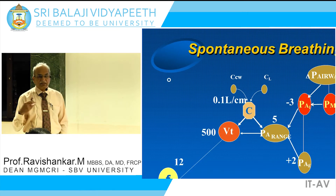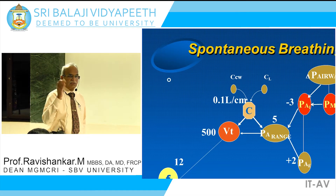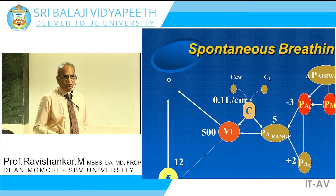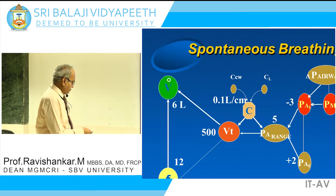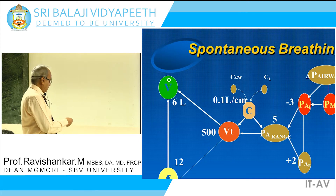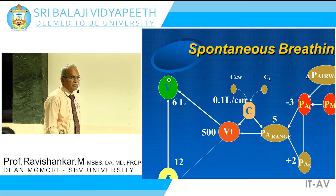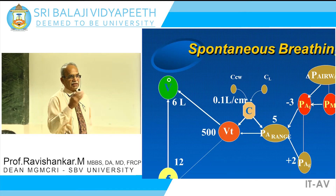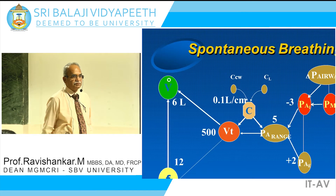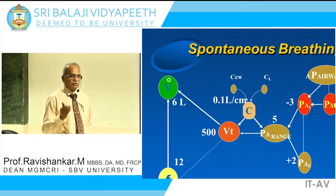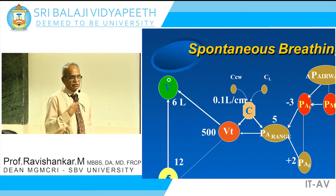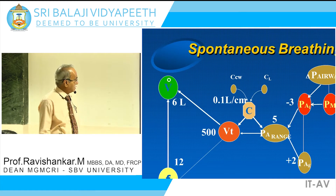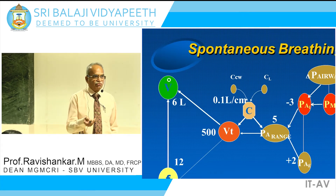We breathe at a particular rate, again controlled by the brain. If we breathe at a rate of 12, then 500 multiplied by 12 gives us a minute ventilation of 6 liters. Of this 6 liters, we expect at least 4 liters to be the alveolar ventilation, because one third of the ventilation — about 150 ml — goes into the dead space. So the remaining 350 ml per breath is the alveolar ventilation, giving a normal alveolar ventilation of 4 liters.